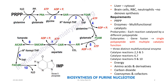Purine nucleotide biosynthesis majorly occurs in the liver and it is a cytosolic process. Certain tissues and cells like brain cells, RBCs, and neutrophils do not undergo de novo purine nucleotide biosynthesis. Brain cells depend on the salvage pathway for purine synthesis.